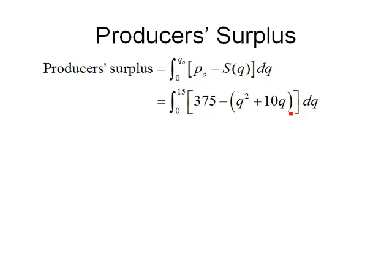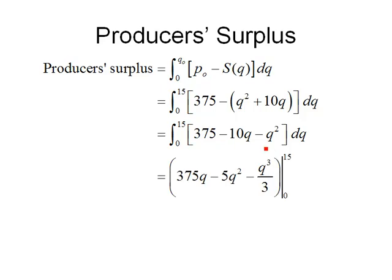Let's distribute the negative. That means we're going to find the definite integral from 0 to 15 of [375 - 10Q - Q²] dQ. The antiderivative is 375Q - 5Q² - Q³/3, and we need to evaluate that at 15 and 0 and subtract.